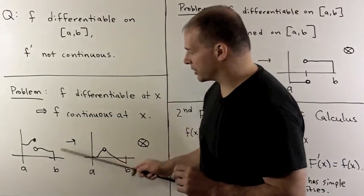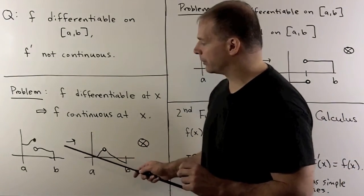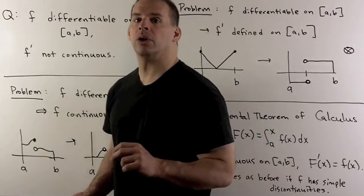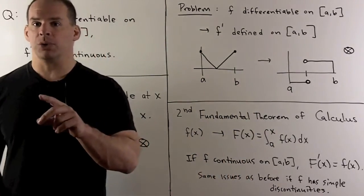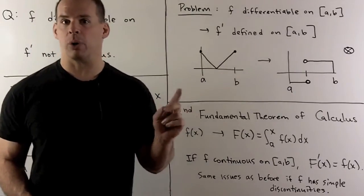So we can't have jump discontinuities. Next attempt. Well, we could use a continuous function, but why don't we put a corner in there somewhere?